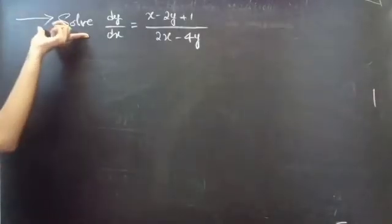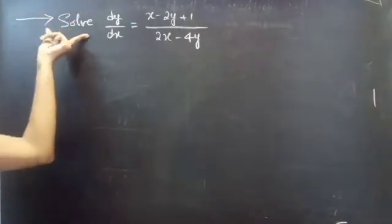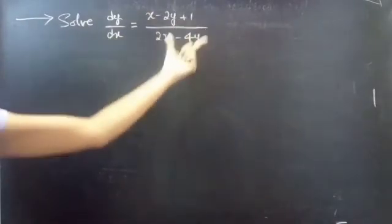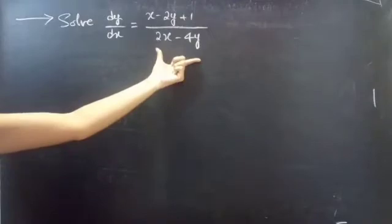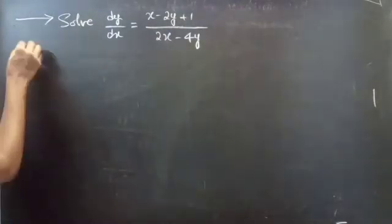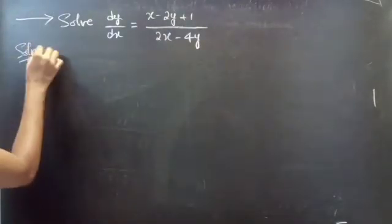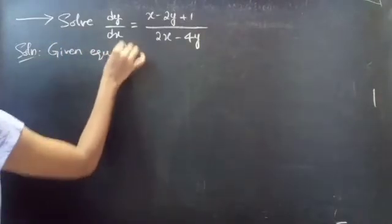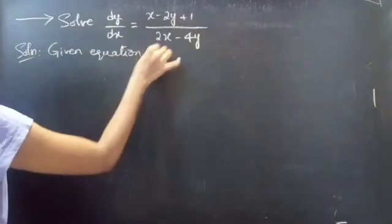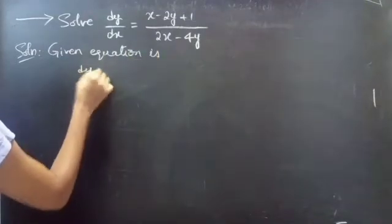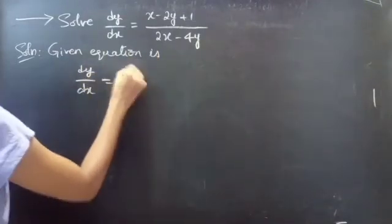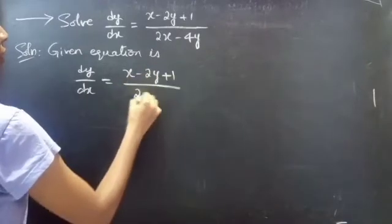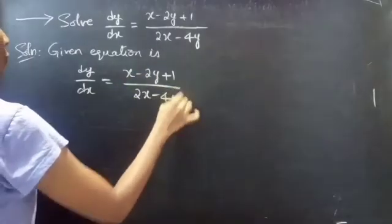Given equation: solve dy/dx equals x minus 2y plus 1 divided by 2x minus 4y. The given equation is dy/dx equals (x minus 2y plus 1) divided by (2x minus 4y).